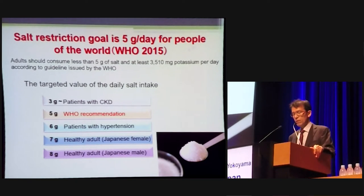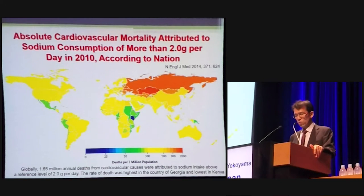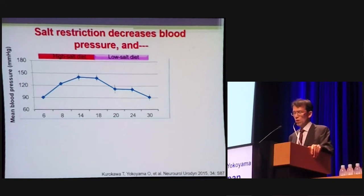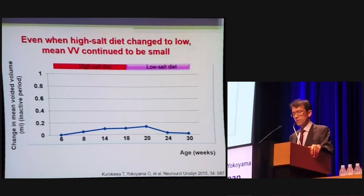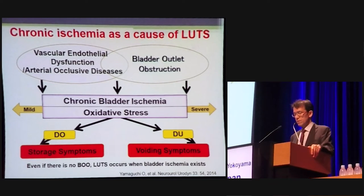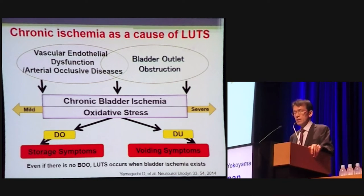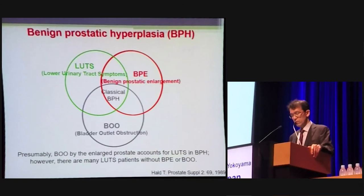Adults should consume less than five grams of salt per day according to WHO guidelines. Globally, 1.6 million annual deaths from cardiovascular causes are attributed to sodium intake. Salt restriction from high to low decreases blood pressure and increases bladder blood flow; however, even if a high-salt diet is changed to a low-salt diet, mean bladder volume continues to be small. Vascular endothelial dysfunction of the bladder induces chronic bladder ischemia and oxidative stress regardless of bladder outlet obstruction. When bladder ischemia is mild, storage symptoms occur; when bladder ischemia is severe, voiding symptoms occur as a result of detrusor underactivity, even if there is no BOO. Urothelial dysfunction occurs when bladder ischemia exists.